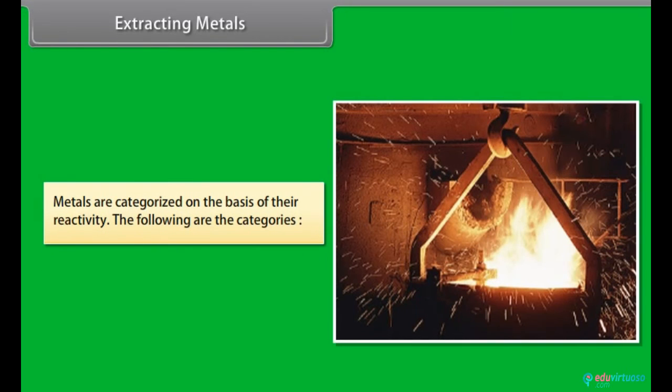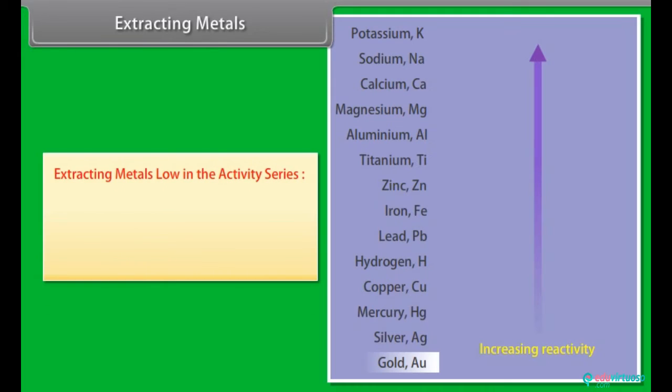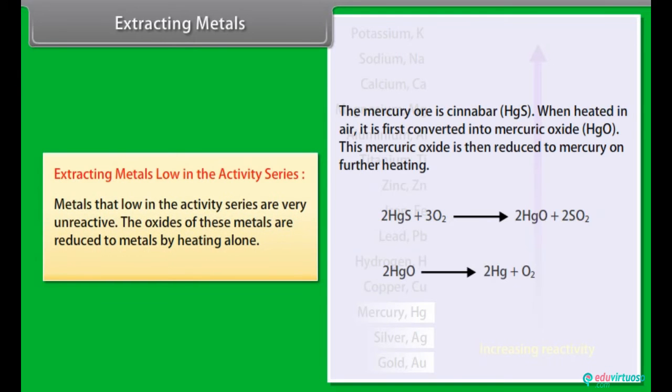Extracting metals. After the metals are separate from their ores, they are classified based on their reactivity. The following are the various categories of metals grouped as per their reactivity. Extracting metals low in the activity series. Metals that are low in the activity series are very unreactive. The oxides of these metals are reduced to metals by heating alone.